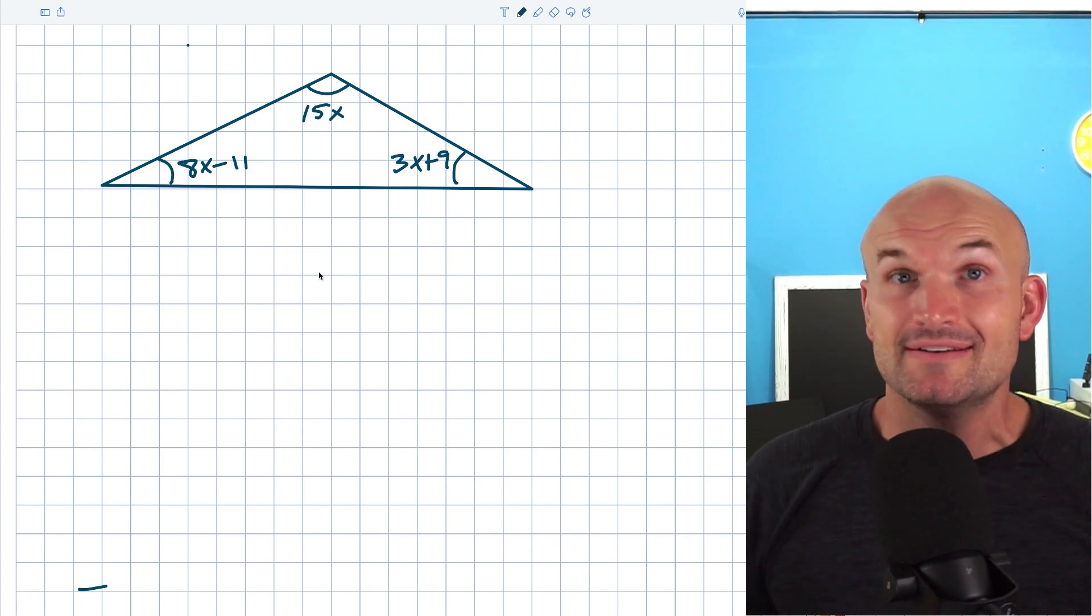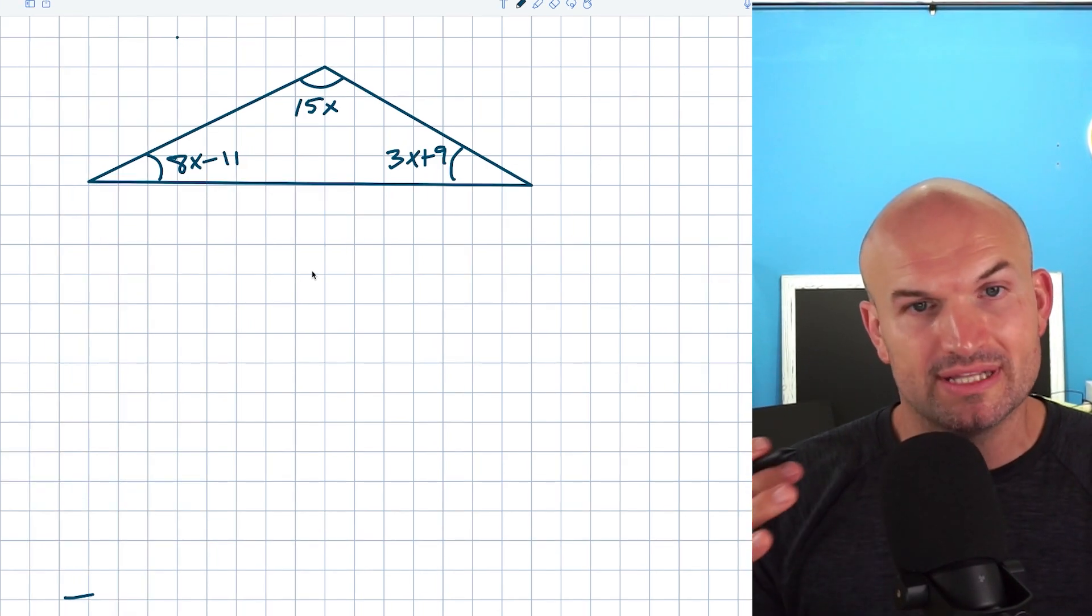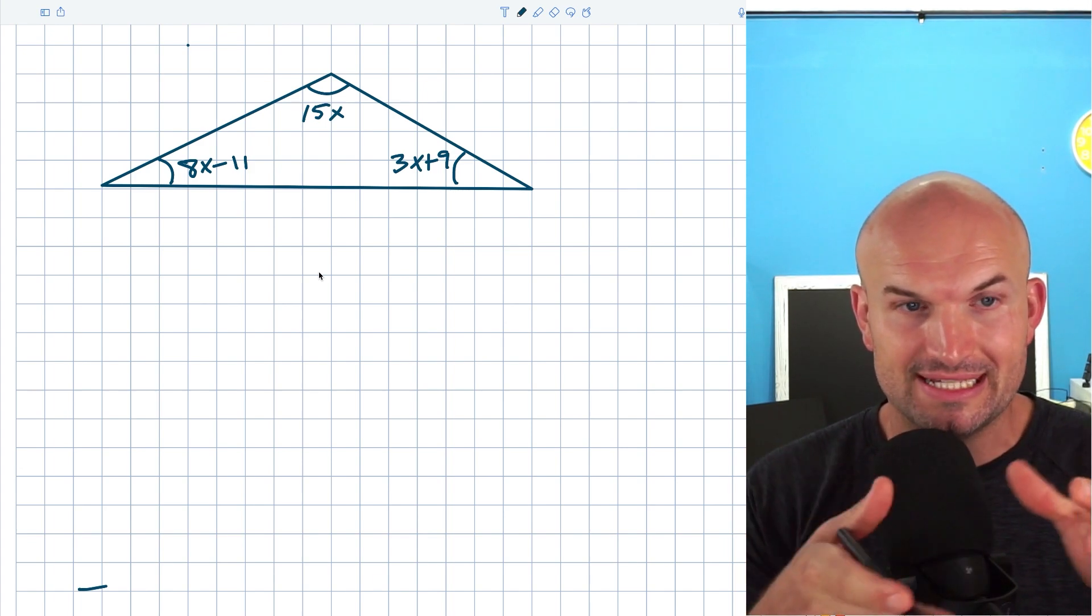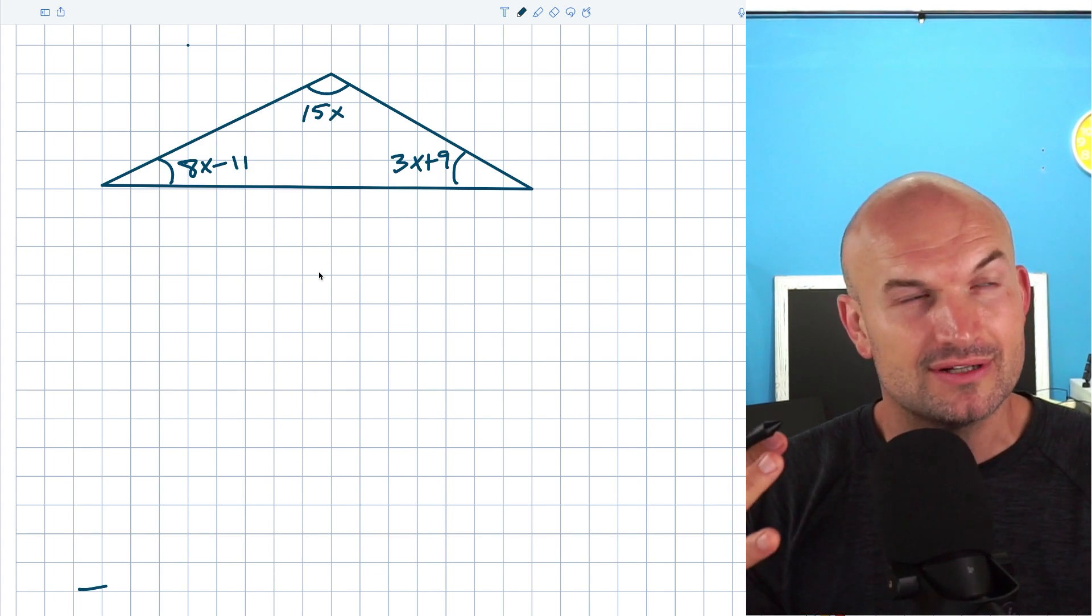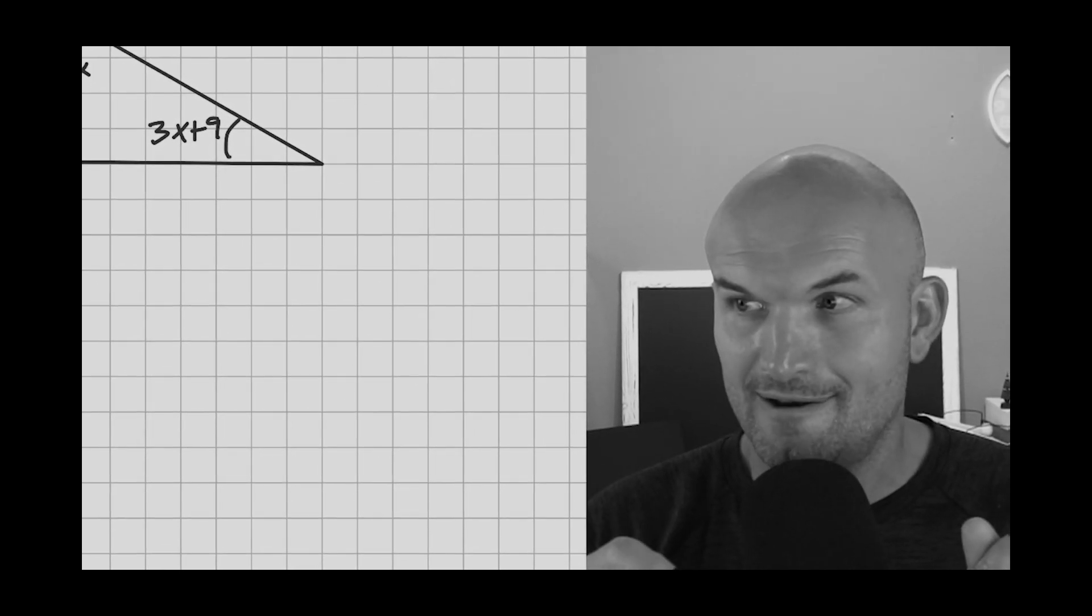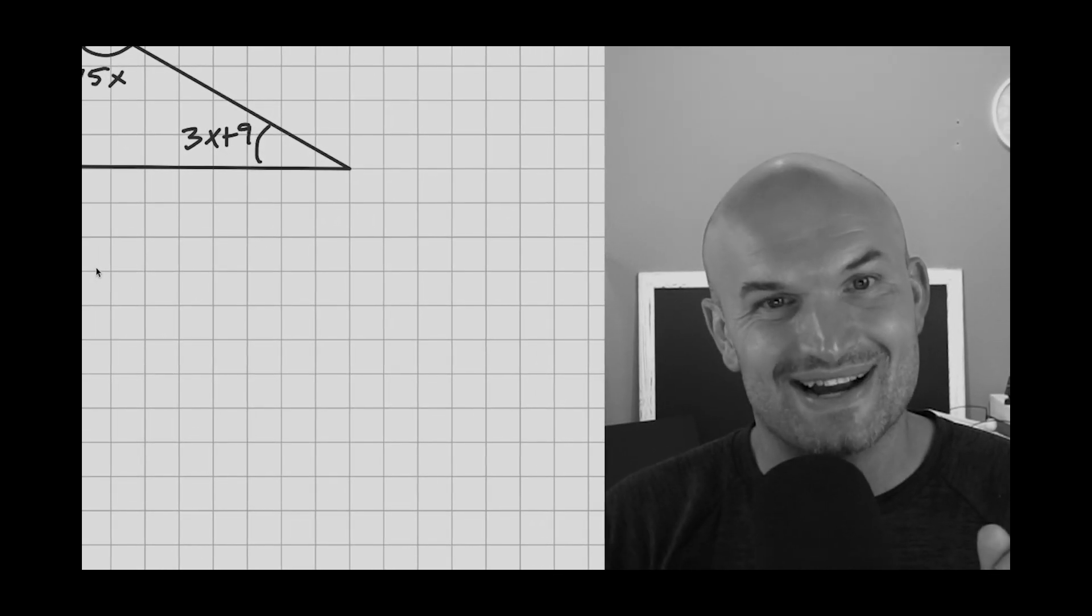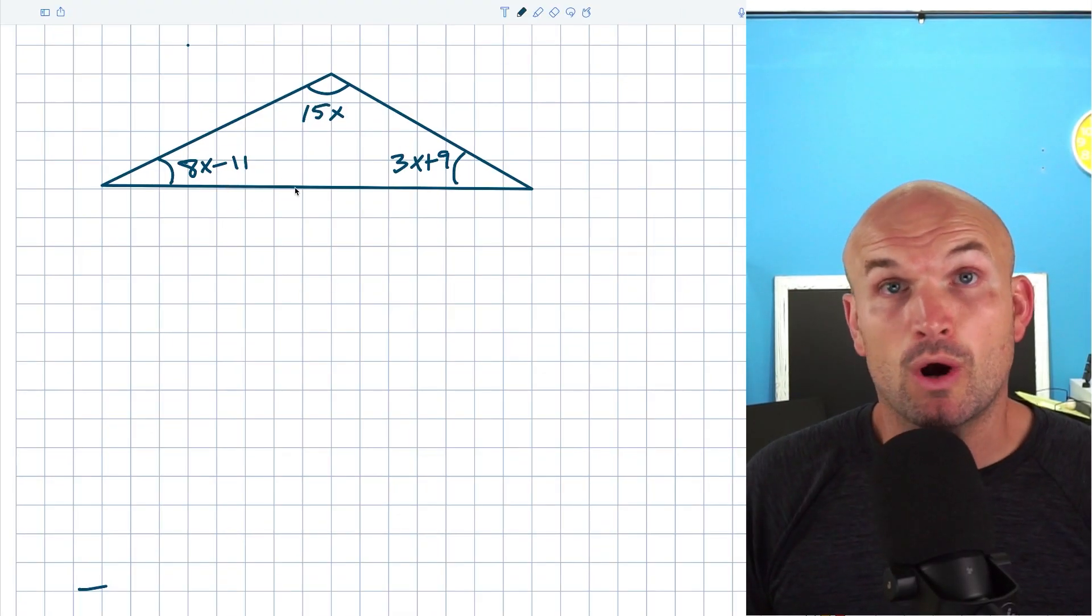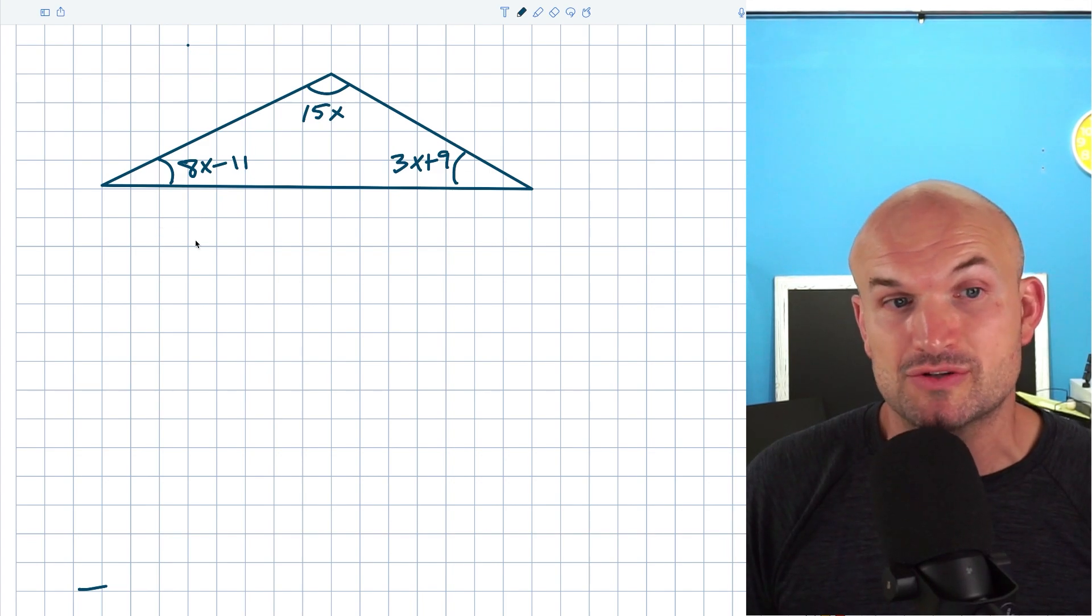In the next example, we have no idea what any of the angles are, but our main goal is just to solve for X. So we got to look at the relationship. These angles have to be related to each other somehow. How are they related? Oh yeah, all the angles in a triangle add up to 180 degrees, the triangle angle sum theorem. In this case, we don't know any of the angles, so I'm just going to write up this relationship.